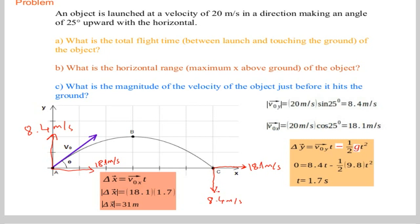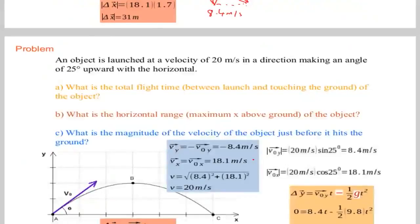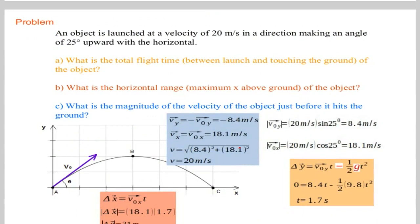We just have to use the Pythagorean theorem to find the final velocity. So that is done over here. Square of 8.4 and square of 18.1 and the square root of the sum gives you 20 meter per second.